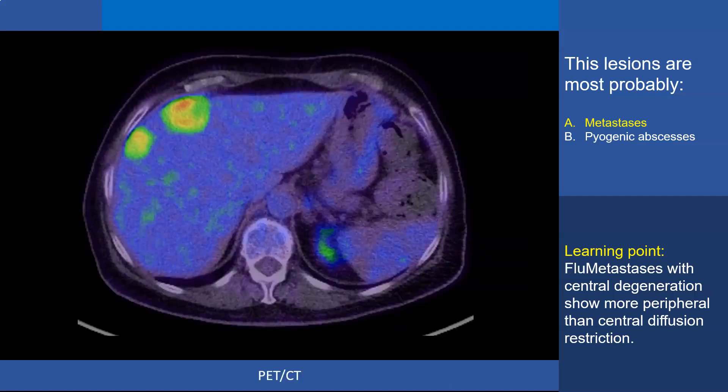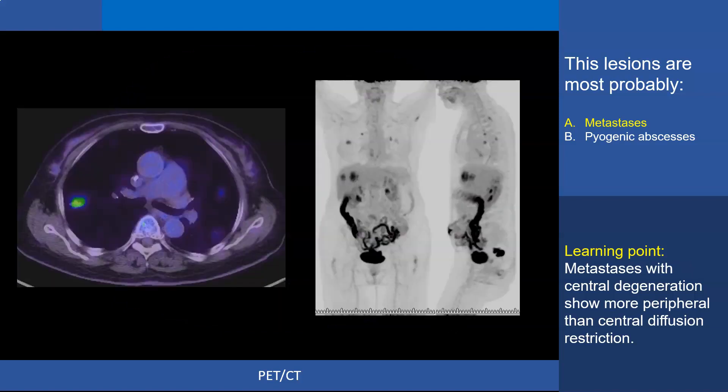On PET-CT, we see hypermetabolic FDG uptake in the whole lesions, not only at the periphery, which tells us that the central part does not contain fluid but contains tumor tissue with a certain degree of degeneration. The patient also has lung metastasis.